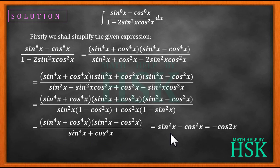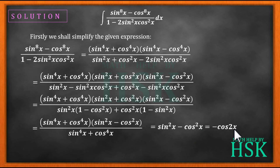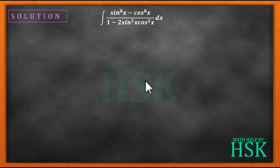The remaining term is (sin²x - cos²x), which can be written as -(cos²x - sin²x). Since cos²x - sin²x = cos2x, taking -1 common gives us -cos2x. So the entire integral simplifies to the integration of -cos2x dx.